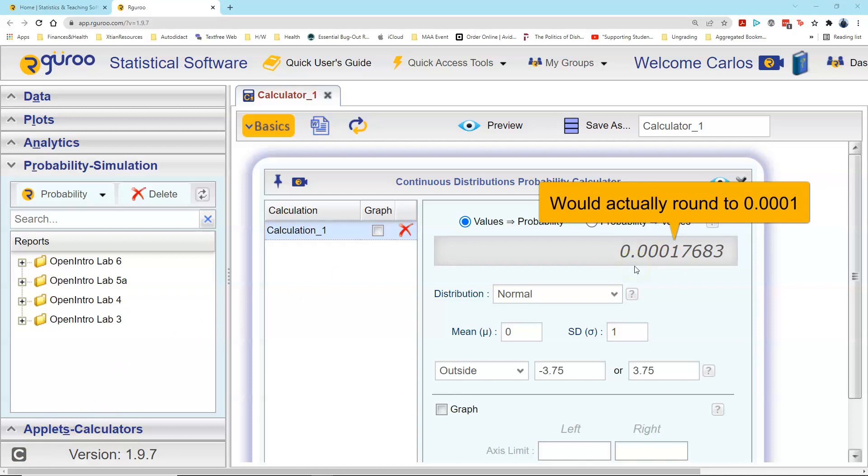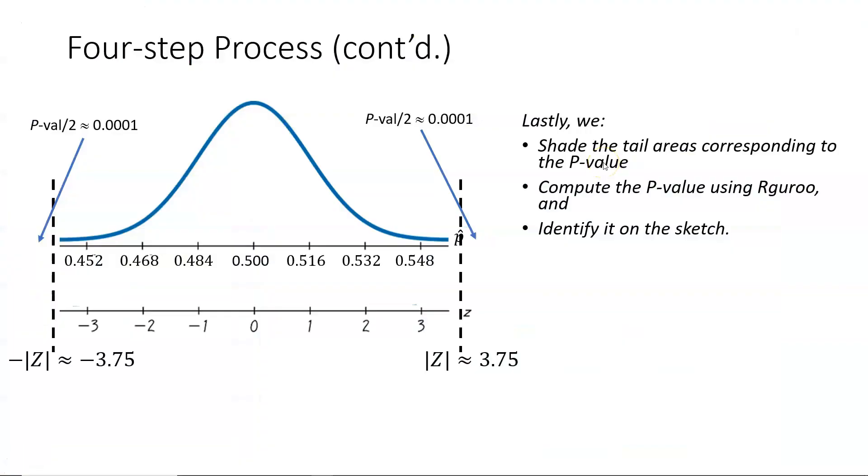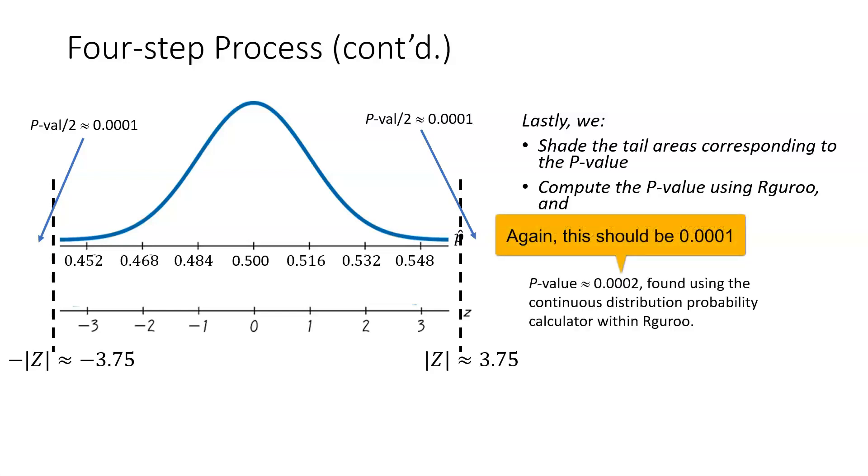In closing, it's worth pointing out that when we find P-values, we will always round whatever we get from our calculator to four decimal places. Now that we've used R guru to find our P-value and labeled it on the sketch, the final thing you would need to add to the sketch is a statement that gives the P-value. I wrote it as P-value is approximately equal to 0.0002, and I stated that I found that value using the continuous distribution probability calculator within R guru.